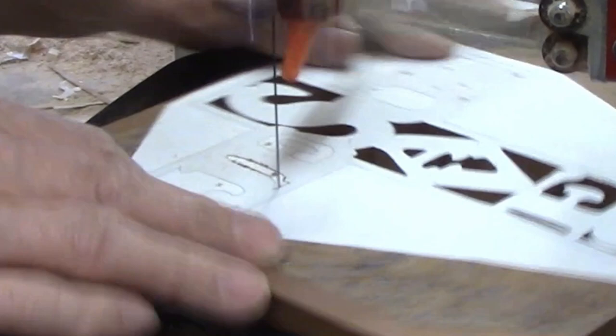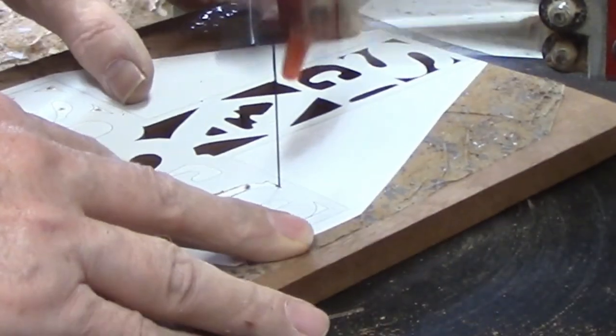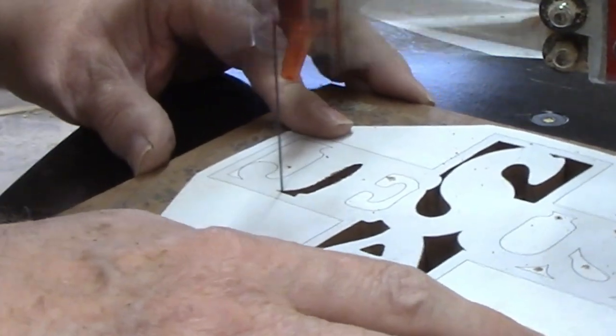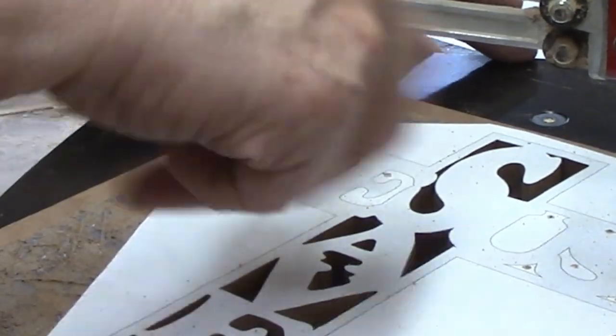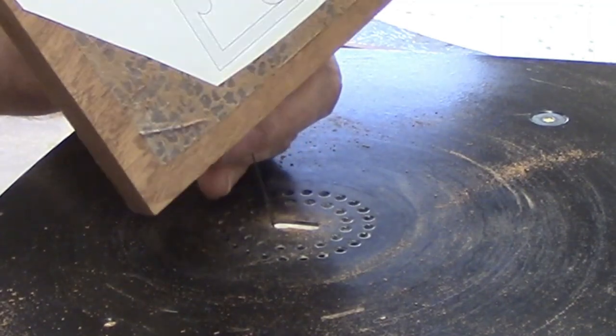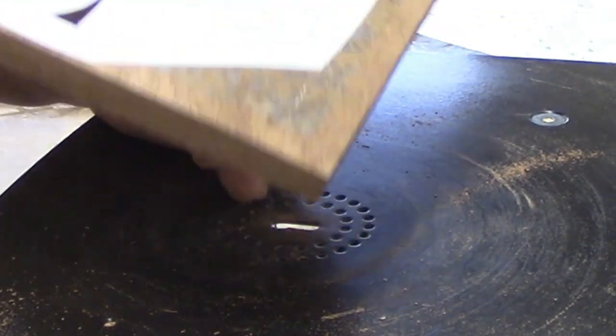The other accessory that most scrollers find is difficult to do without is a foot switch. You plug the foot switch into your wall outlet then plug your scroll saw into the foot switch. You then leave the scroll saw power switch in the on position all the time. When you depress the foot switch the scroll saw runs.